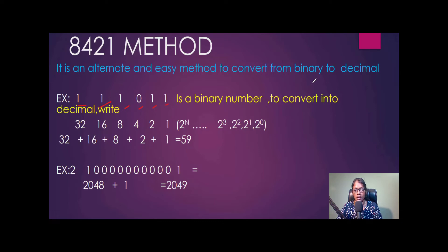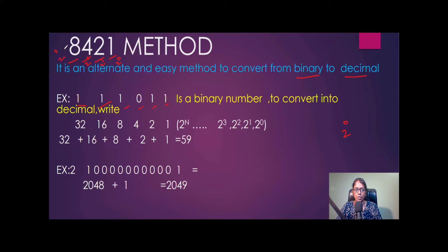This is the 8421 method — an alternate and easy method to convert from binary to decimal, and also from binary to hexadecimal. This is nothing but 2 to the power of 0, 2 to the power of 1, 2 to the power of 2, 2 to the power of 3, and similarly 2 to the power of 4, 2 to the power of 5, and so on.